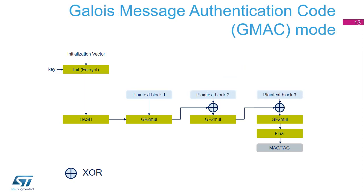Galois message authentication code, or GMAC, allows authenticating a message and generating the corresponding message authentication code. GMAC is similar to GCM, except that it's applied to a message that only contains the plain text authenticated header. All steps and settings are the same as GCM, except that the payload phase will not be used.